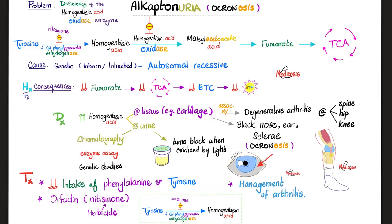Remember the three famous ketone bodies in the human body? Acetone, acetoacetic acid, and beta-hydroxybutyric acid. Can acetone give energy? No. Can acetoacetate give energy? Yes. Beta-hydroxybutyrate? Yes. Acetone has no physiological significance for the human body. However, it has clinical significance — a physician can smell the acetone odor in a patient's breath and diagnose ketoacidosis.